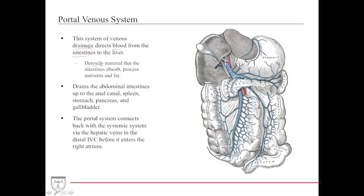The body takes this nutrient-, toxin-, and fat-filled blood to the liver, where the liver uses its cytochrome P450 systems and other associated enzymes to process it all. The blood is then drained into the hepatic veins, where it enters back into the IVC. The portal venous system receives blood from the abdominal intestines — from the lower esophagus all the way to the anal canal — as well as the spleen, stomach, pancreas, gallbladder, and other accessory abdominal organs.